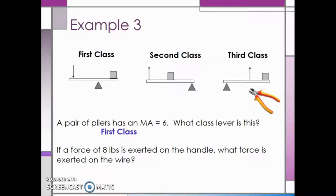Next, if a force of eight pounds is exerted on the handle, what force is exerted on the wire of this pliers? In order to find the load force, we will take the effort force and multiply by the mechanical advantage. We will be using this idea quite a bit in later sections. We will take the eight pound force and multiply that by the mechanical advantage of six. This gives us a load force of 48 pounds, which means 48 pounds of force is applied to the wire.